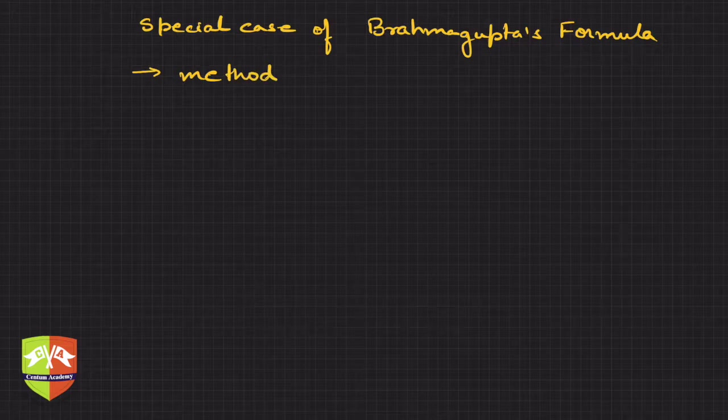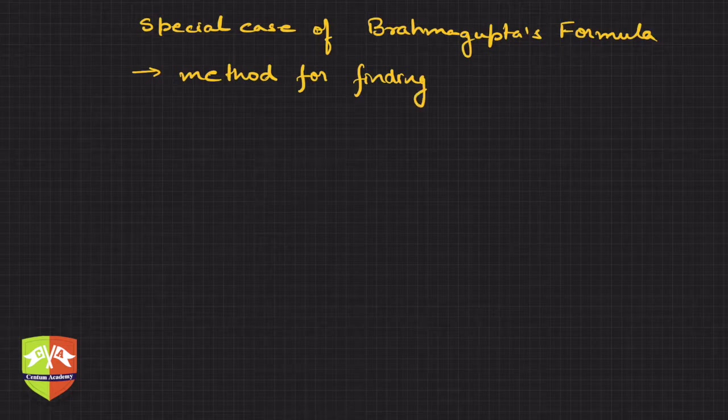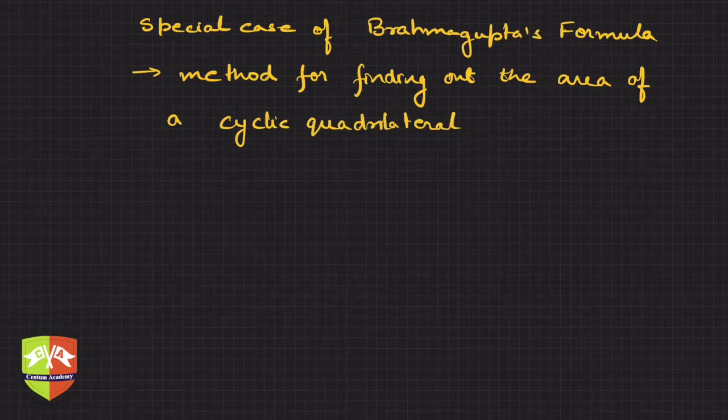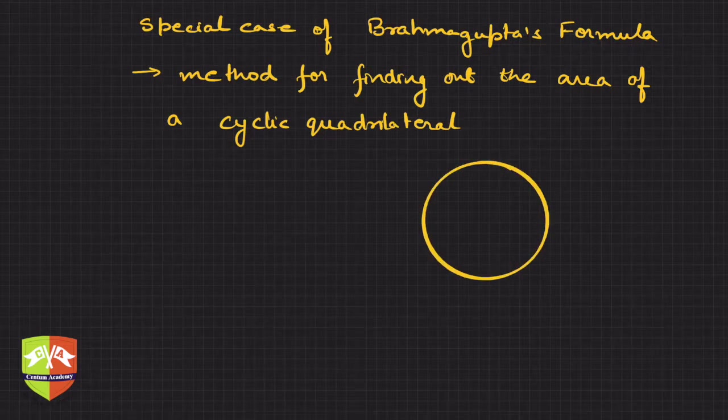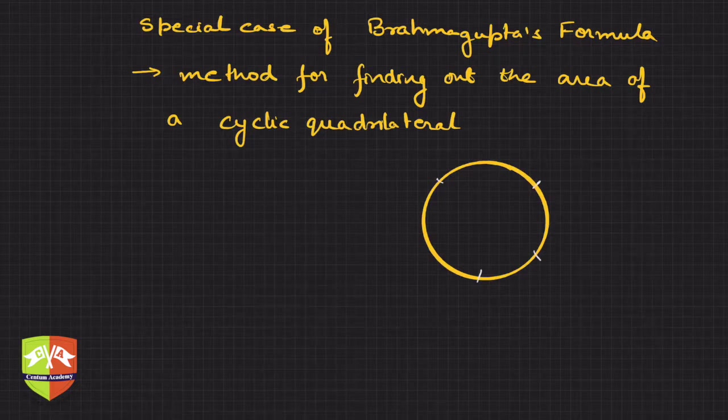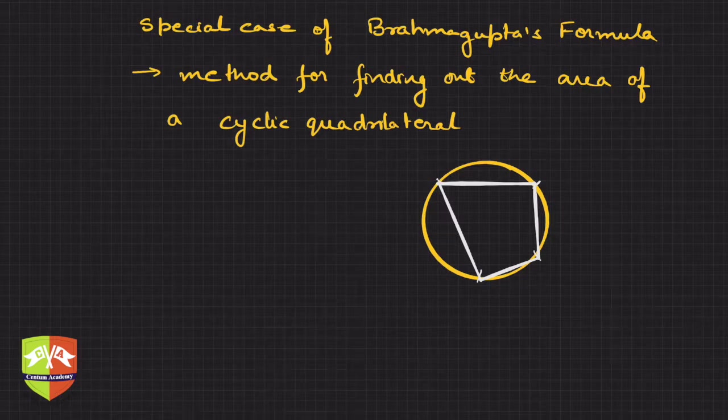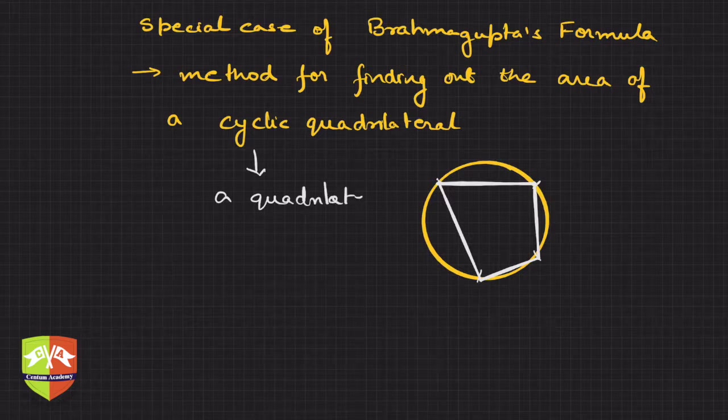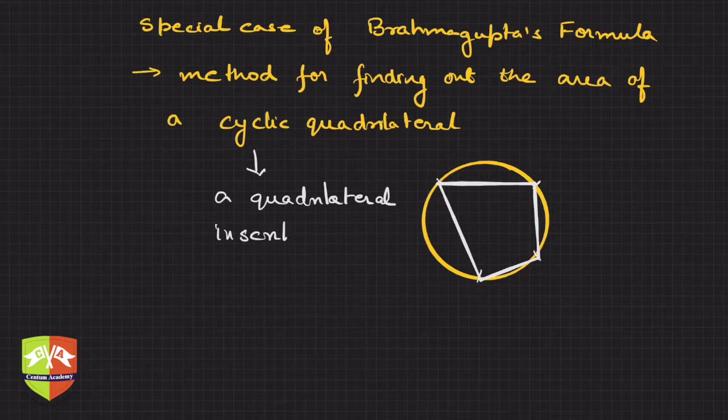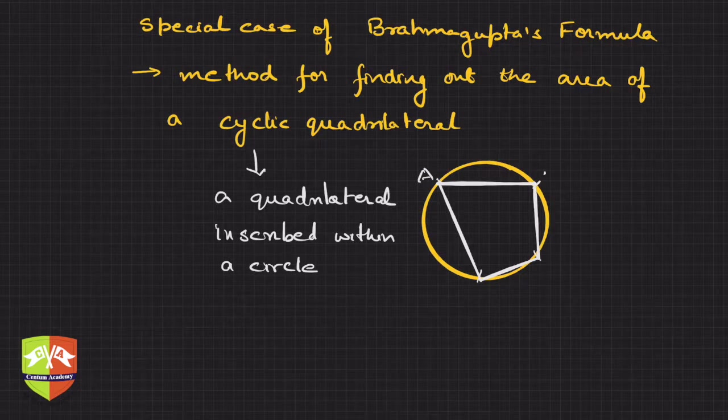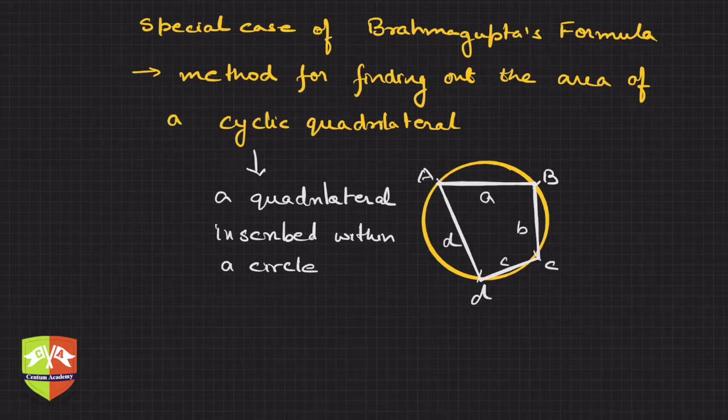Brahmagupta's formula was a method or formula for finding out the area of a cyclic quadrilateral. What is a cyclic quadrilateral? If you take any circle and pick four points on it, one, two, three, four, and join them, you'll get a quadrilateral. This quadrilateral is called a cyclic quadrilateral - a quadrilateral inscribed within a circle.